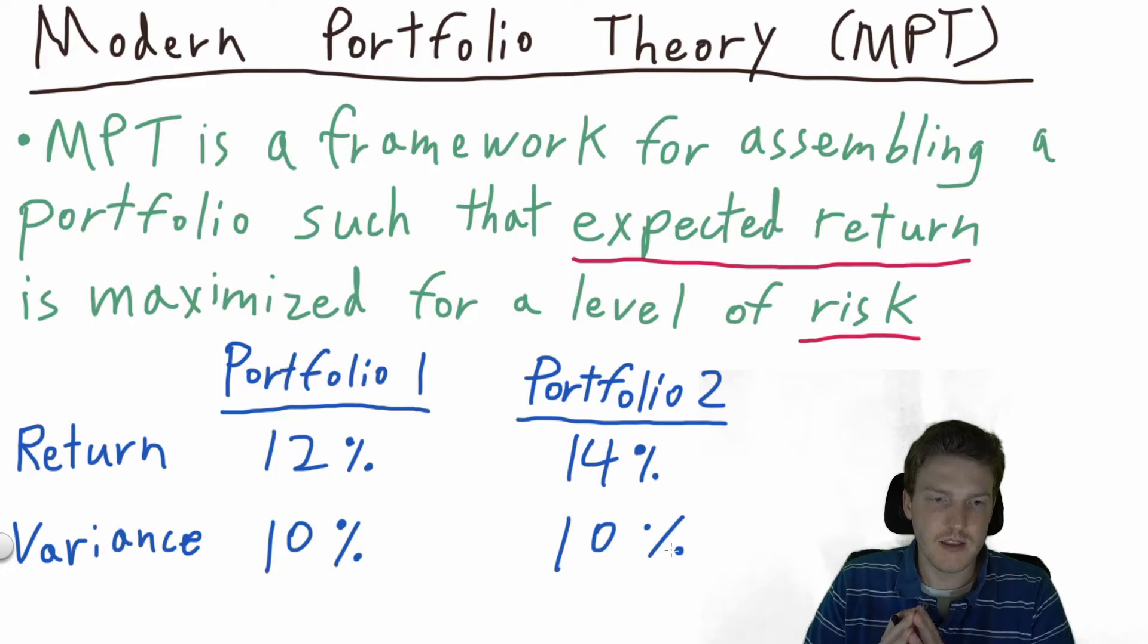If you look at the bottom of the screen, you'll see there's two portfolios. Portfolio 1 has a return of 12% and a variance of 10%. Portfolio 2 has a return of 14% and a variance of 10%.